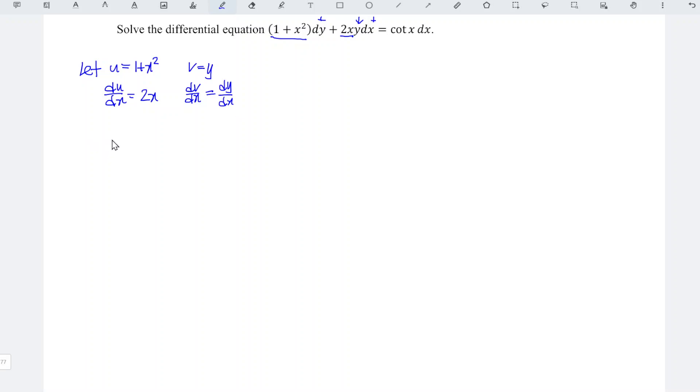Now we should apply the product rule. Differentiate uv with respect to x. We should obtain u dv/dx plus v du/dx. Substitute accordingly. We have 1 plus x square times dy/dx plus v which is y times du/dx which is 2x.